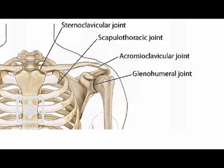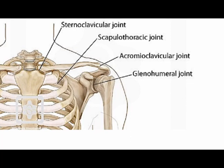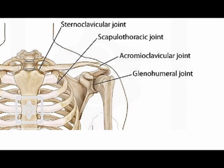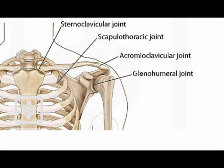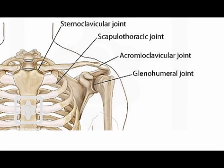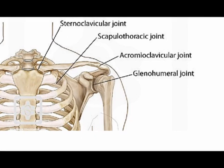The shoulder girdle and the pelvis provide connection between the appendicular skeleton and the axial skeleton. These connection points are where mechanical loads are transferred. The appendicular skeleton is structured for a greater range of motion and locomotion generation when compared to the axial skeleton.